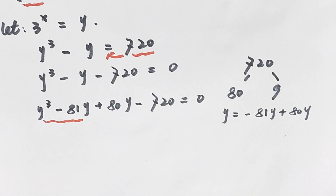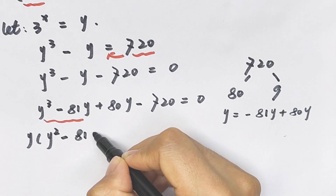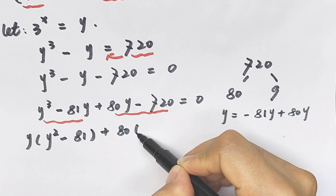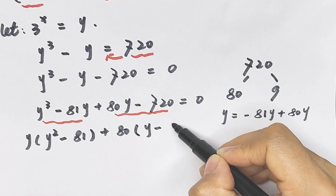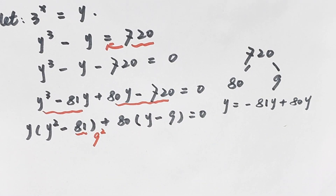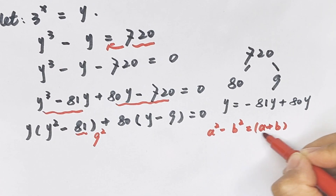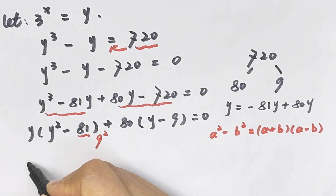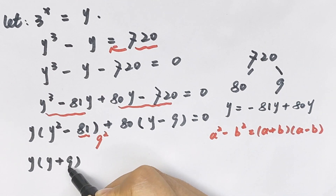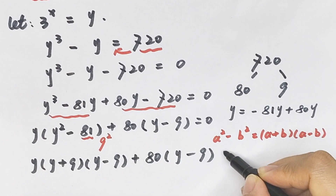In this part, y is a common factor in the first two terms, so we take y out of the bracket, giving y(y² minus 81). Then from the last two terms, we take 80 out, giving 80(y minus 9). Note that 81 equals 9 squared, so we apply the difference of squares formula: a² minus b² equals (a+b)(a-b). This gives y times (y minus 9)(y plus 9), then plus 80 times (y minus 9) equals 0.